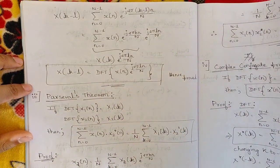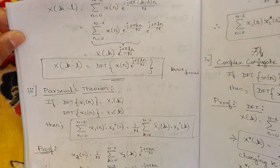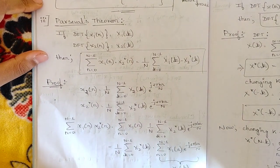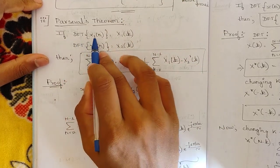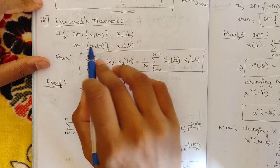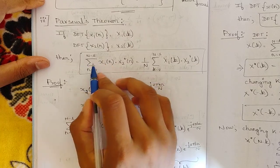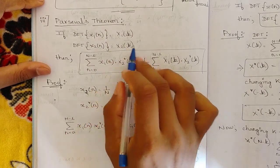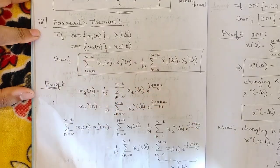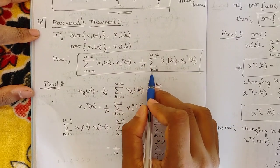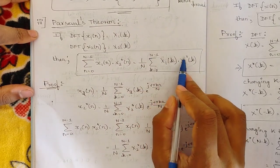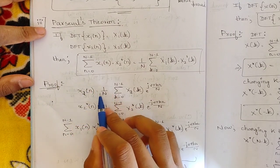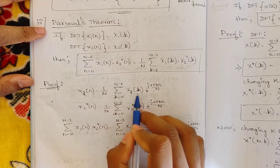Now let's see the next sub-question: Parseval's theorem — a very important one where two sequences are given. This theorem states: if DFT{x₁(n)} = X₁(k) and DFT{x₂(n)} = X₂(k), then summation from n = 0 to N-1 of x₁(n) · x₂*(n) = (1/N) · summation from k = 0 to N-1 of X₁(k) · X₂*(k), where the star represents the complex conjugate.